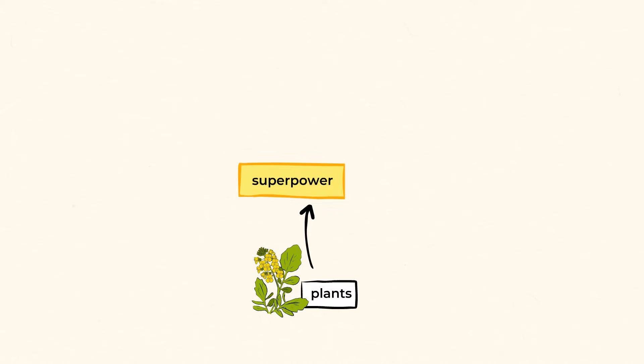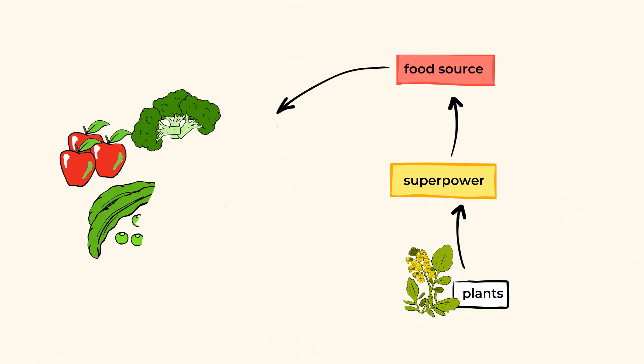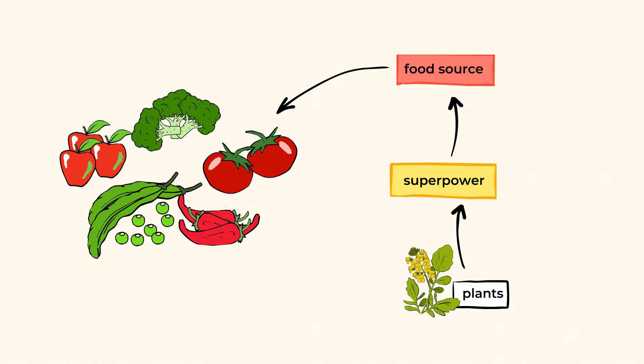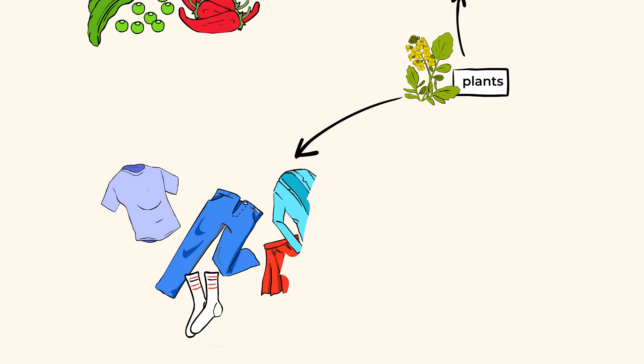The other superpower plants have for life on planet Earth is that they are our food source and are the reason we can survive. What do I mean by this? Well, plants give us a large part of the food we eat, and they even give us some of the clothes we wear.